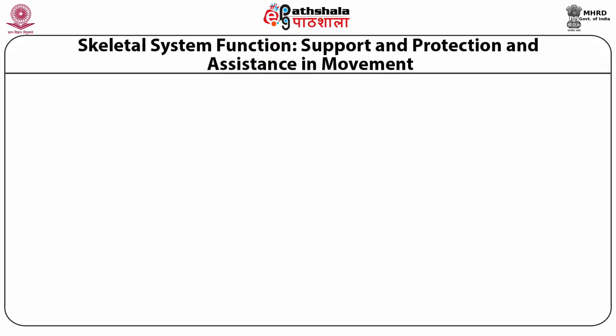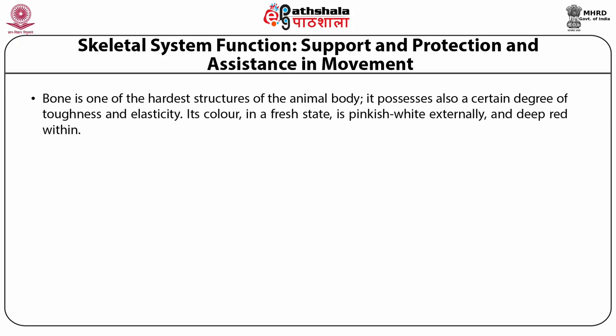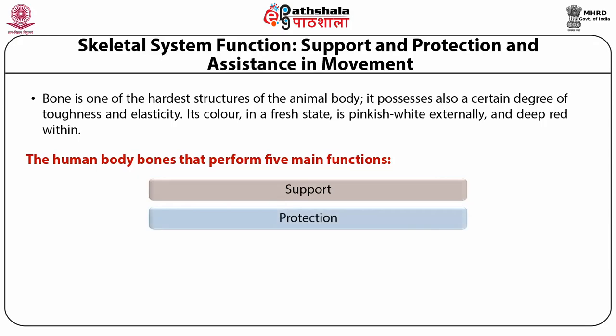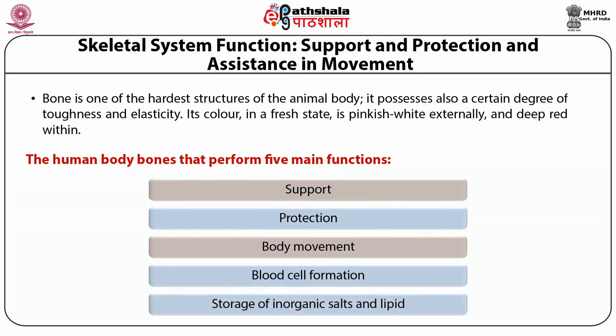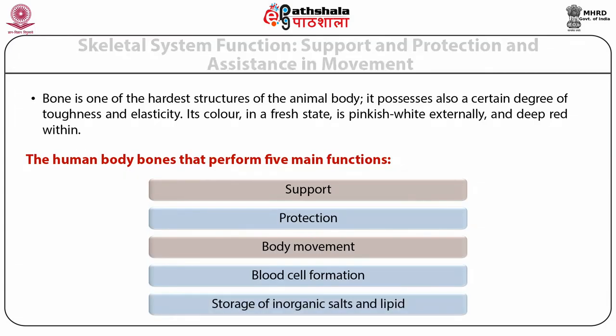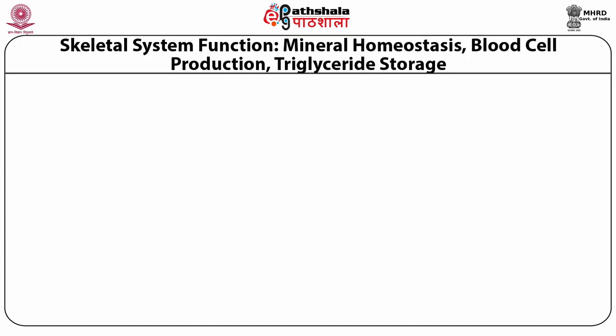The skeletal system functions in support, protection, and assistance in movement. Bone is one of the hardest structures of the animal body. It possesses a certain degree of toughness and elasticity. Its color in a fresh state is pinkish-white externally and deep red within. The human body bones perform five main functions: support, protection, body movement, blood cell formation, and storage of organic salts and lipids. Skeletal system functions also include mineral homeostasis, blood cell reproduction, and triglyceride storage.